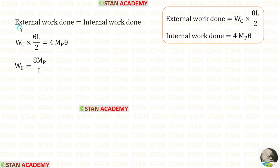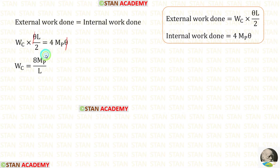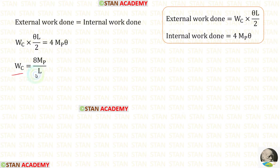Now let us equate the external work done and the internal work done. We eliminate θ and bring L/2 to the other side. 2 × 4 = 8. So in the beam mechanism, Wc = 8MP/L.